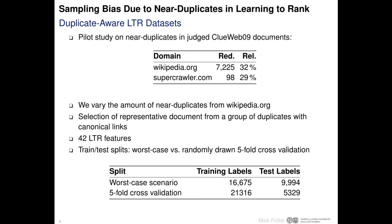We create two kinds of train/test splits: one worst-case train/test split with an excessive number of relevant duplicates during training to provide an empirical upper bound on the effects, and we contrast the worst-case scenario with randomly drawn train/test splits. Please refer to our paper for details.